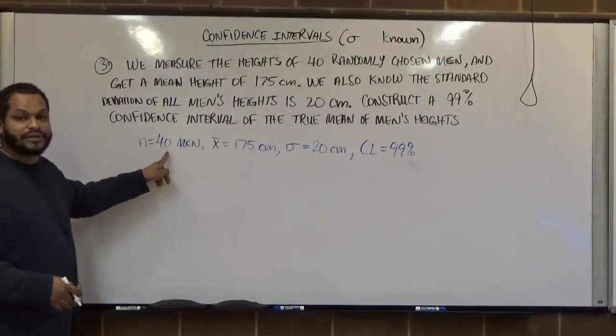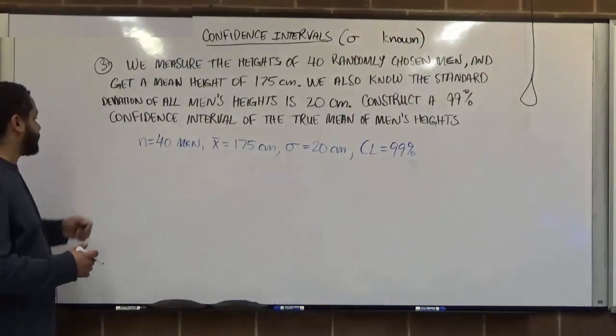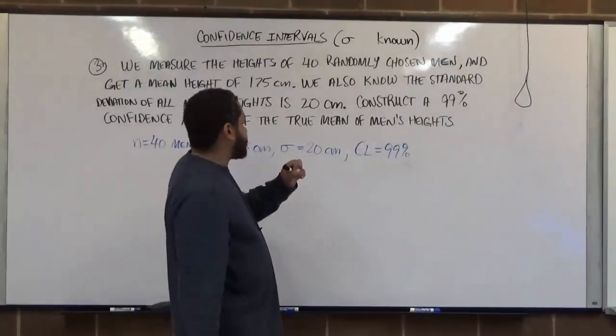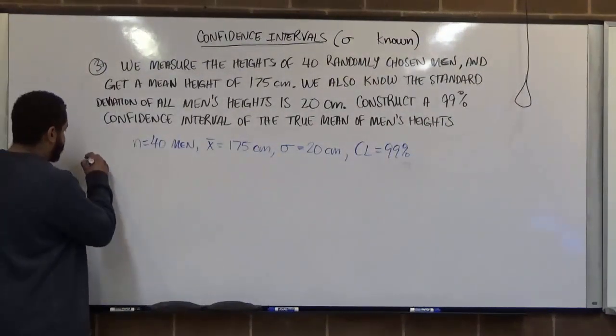And our n is greater than or equal to 30, which means we can use the normal distribution of the z values. Now, the three most important things is to define our critical values and our critical z values.